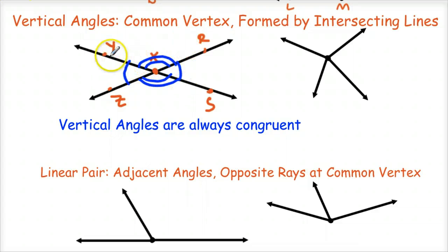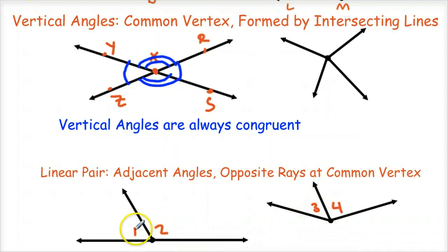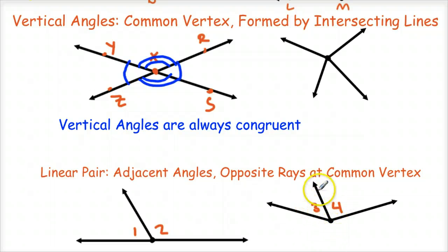Just like these intersecting lines form a vertical angle, you need a straight line to make a linear pair. We'll call this angle 1, angle 2, angle 3, and angle 4. Angle 1 and 2 make up a linear pair because they are adjacent, they share a side and a vertex, and they have opposite rays at the vertex — clearly that's a straight line. Angles 3 and 4 are not a linear pair because, even though they're adjacent with a common side and vertex, at that common vertex I don't have opposite rays — this doesn't make a line.